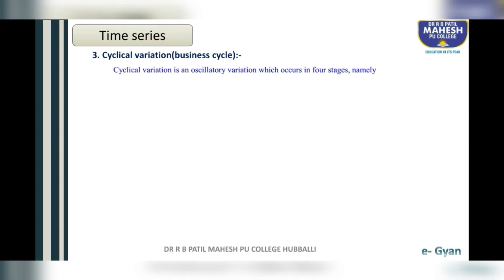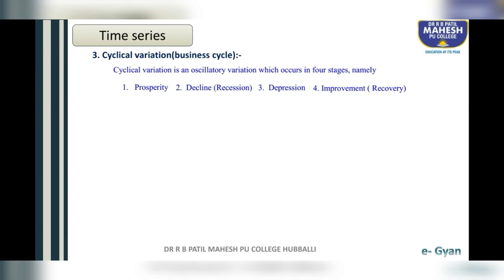Cyclical variation is an oscillatory variation which occurs in four stages: namely, the first one is prosperity, the second one is recession, the third one is depression, and the fourth one is improvement. This always happens in four stages only.